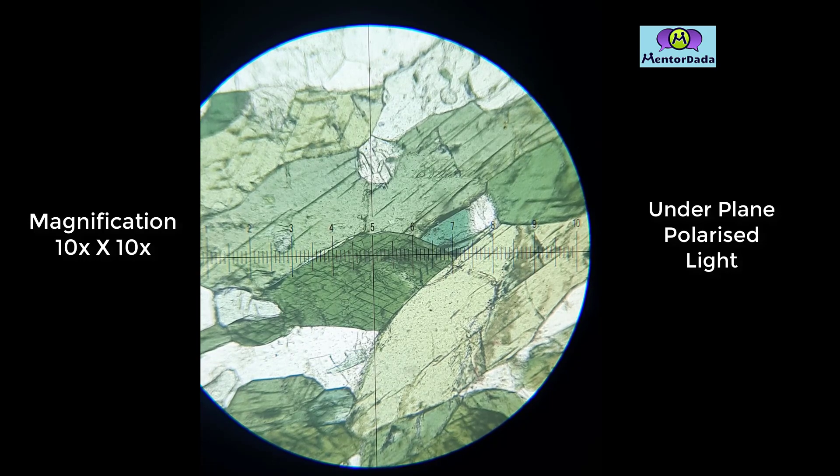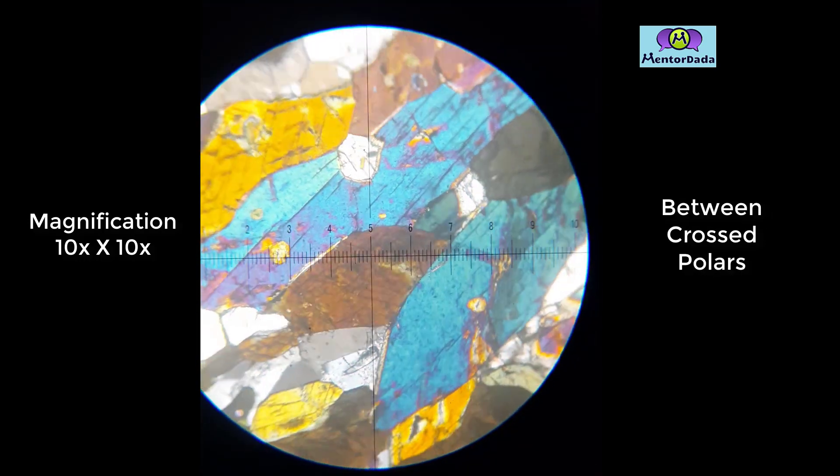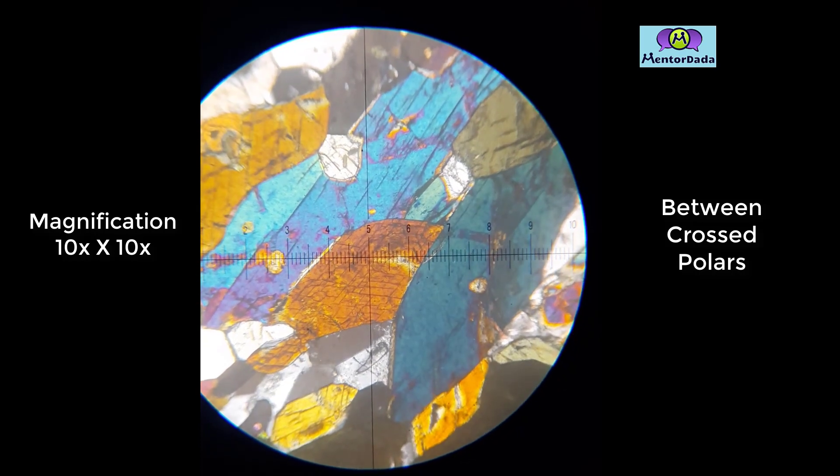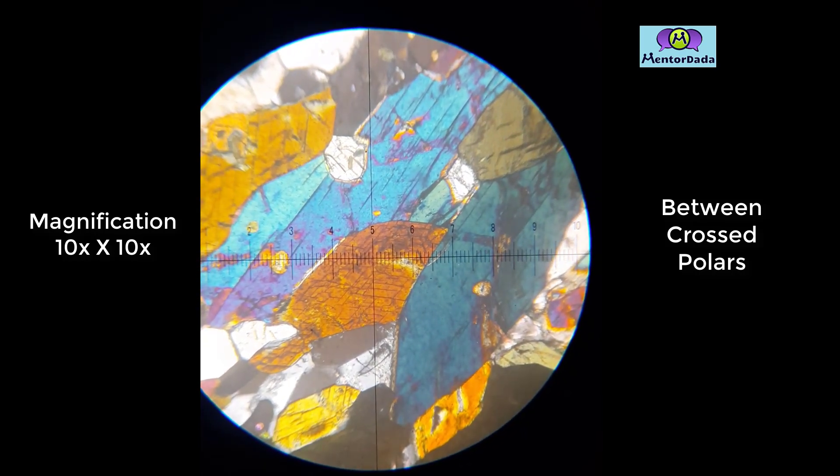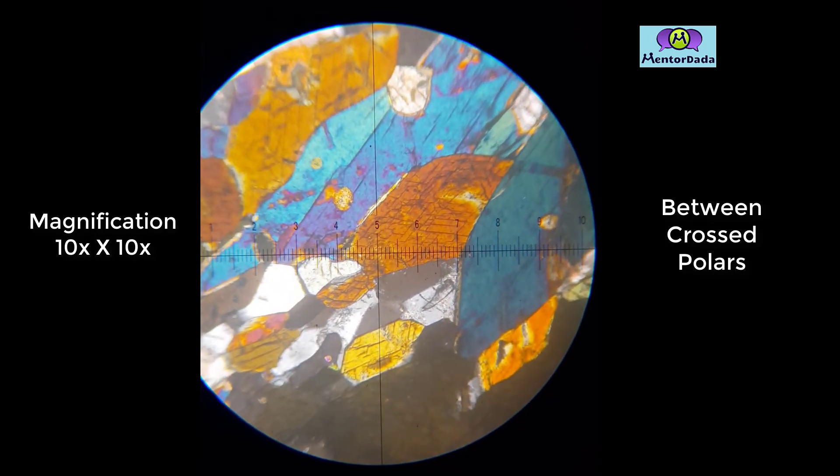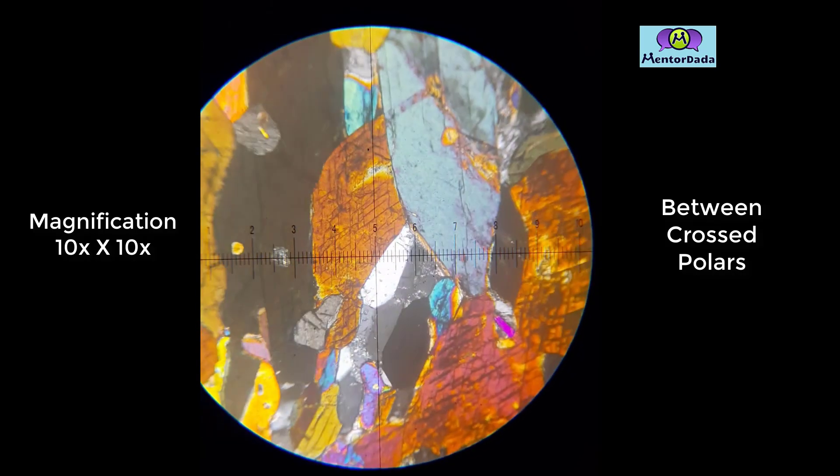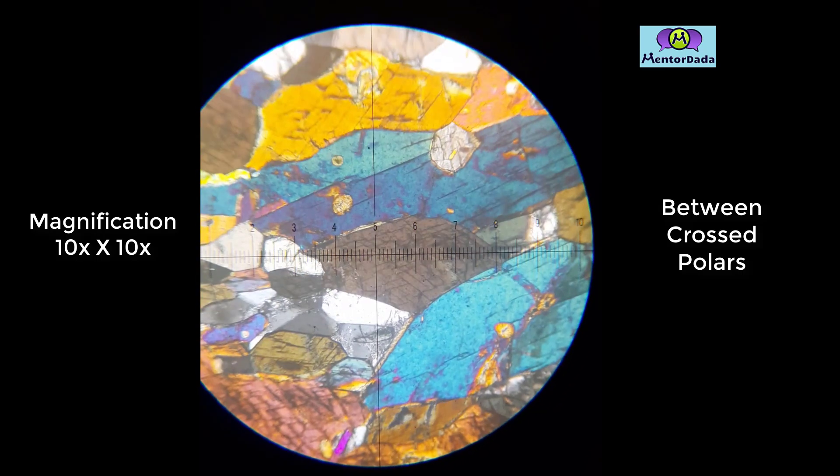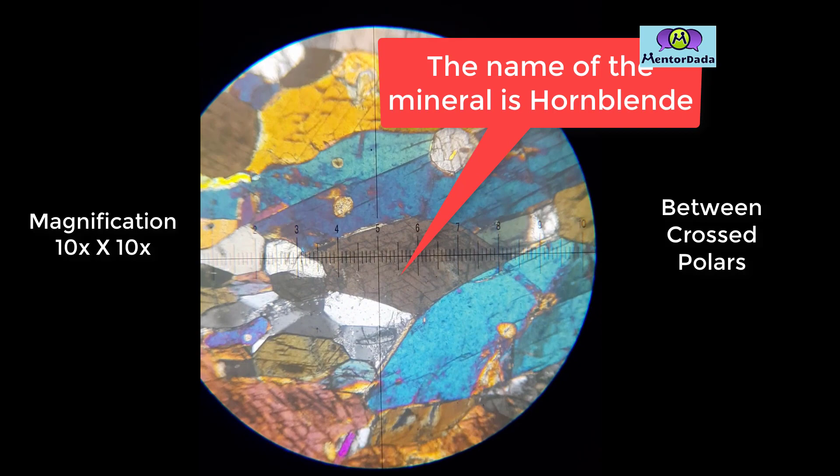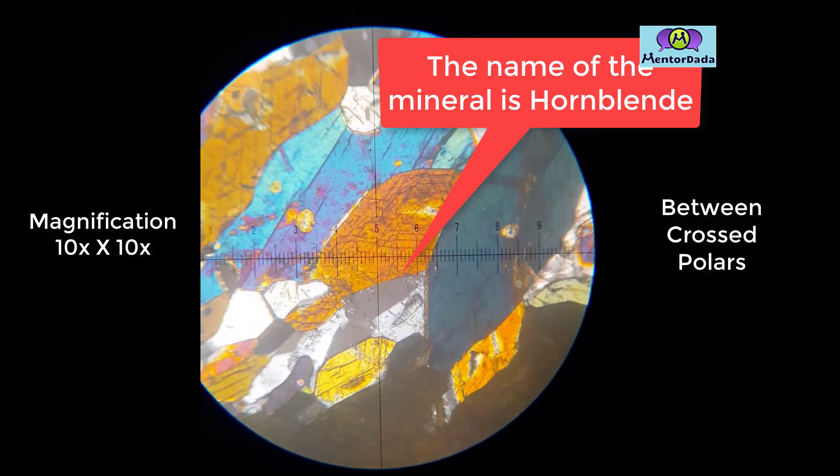No alterations are in the grain. Fractures are present. Twinning is not found. The name of the mineral is hornblende.